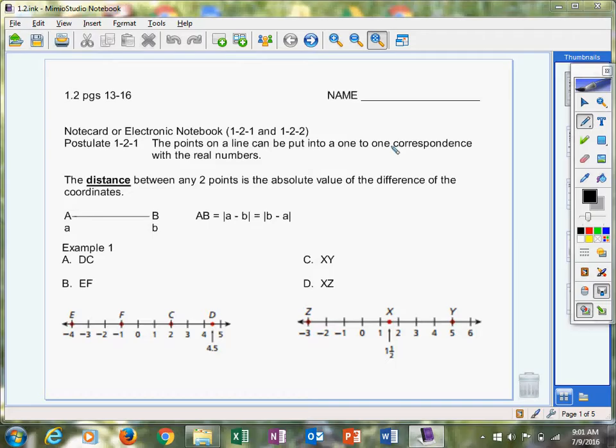Okay, and now in this one we're going to have two of them. So postulate 1-2-1, the points on a line can be put into a one-to-one correspondence with the real numbers. In other words, if I created a line segment and I made a number line, there would be numbers that correspond in sequential order with each of the points is what it's saying.